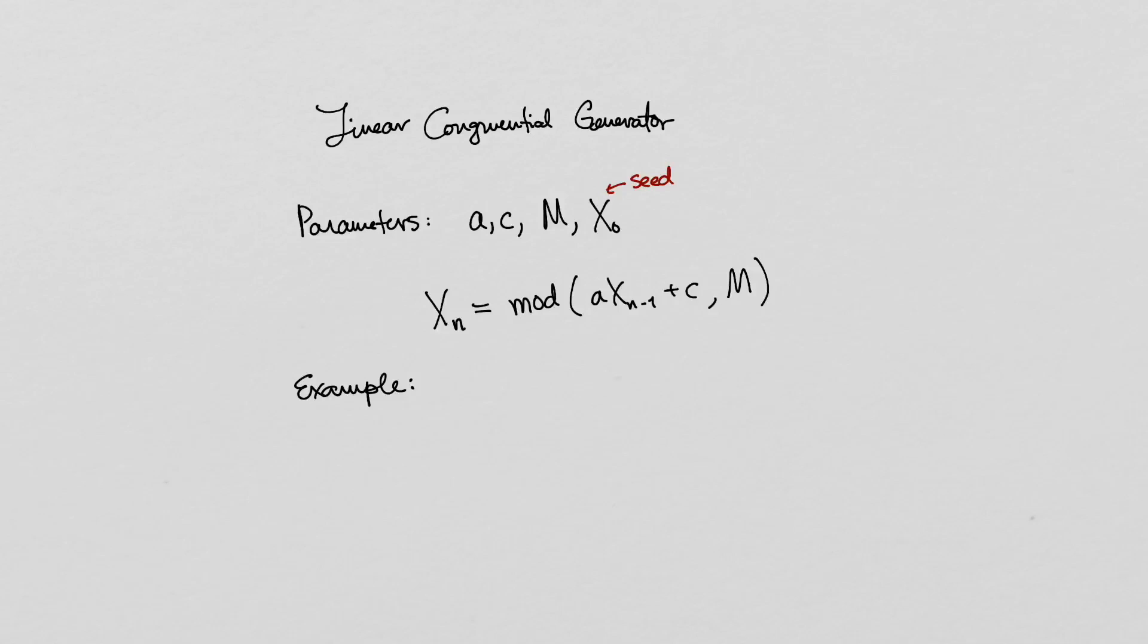For example, suppose we take m equals 5, a equals 2, and c equals 0. If the seed value is 2, then the sequence begins 2, 4, 3, 1, 2, 4, 3, 1, and so on.